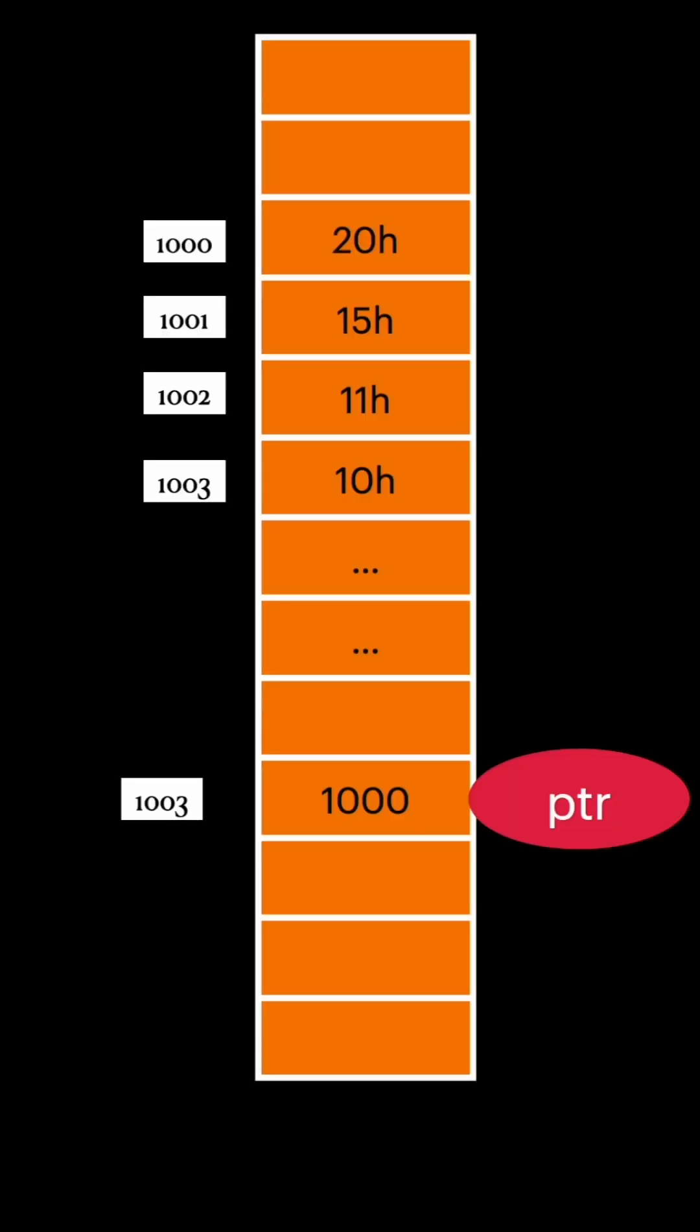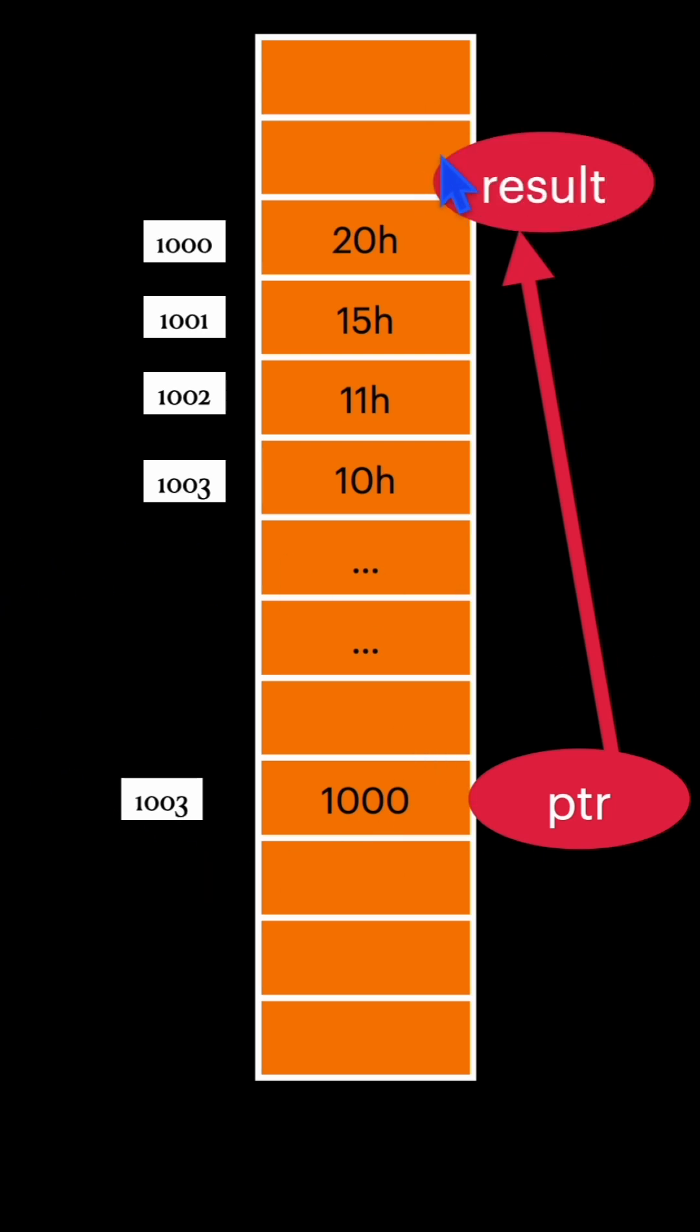What is pointer in C programming? A pointer is a common variable which points to another variable or stores the address of another variable.